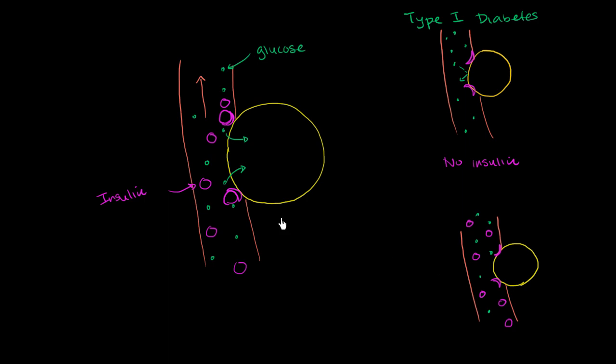So our pancreas is producing insulin and putting it into our bloodstream, so it's there to be used. But a situation can arise where the receptors are not working properly. Or we've become insensitive or desensitized to insulin. So desensitized receptors. So in this situation, maybe sometimes it might be the insulin is hard to bind. Or even if it does bind, it's not working properly. So the glucose will not enter the cell.